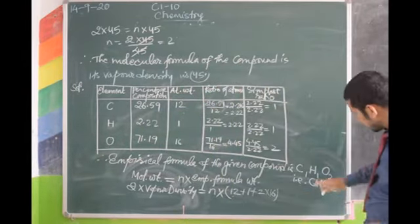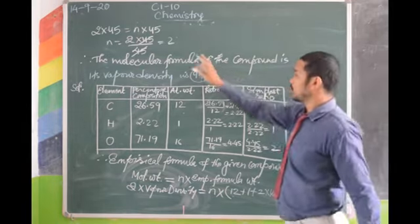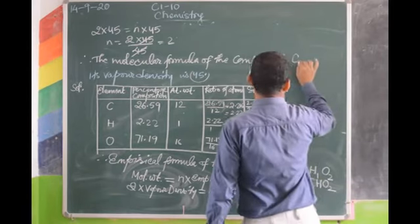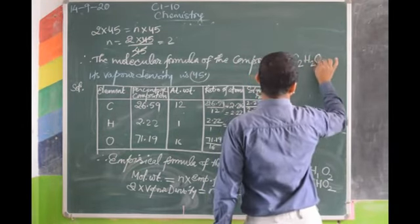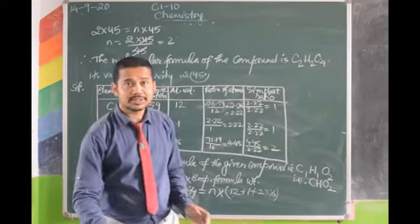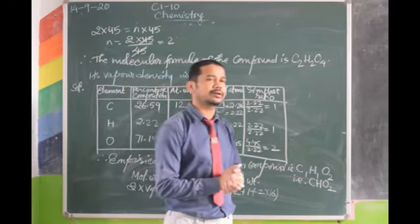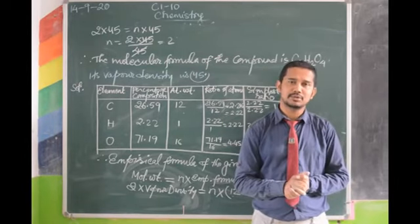Multiply all subscripts by N = 2. So the molecular formula becomes C2H2O4. This is the process of how you find molecular formula and empirical formula using the conditions given.